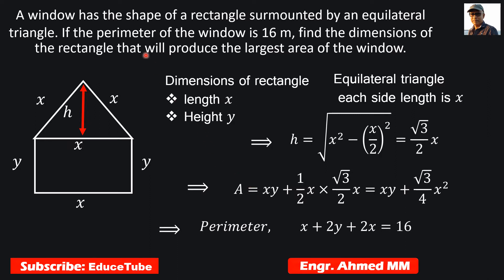Now we need to find the perimeter. It is given in the question that perimeter of the window is 16. We need to add those perimeters: x plus 2y plus 2x equals 16. Now we need to find y from this equation, then that y we will substitute in the next slide.